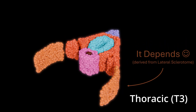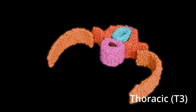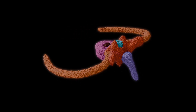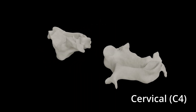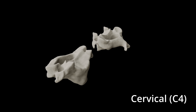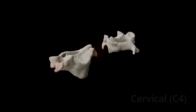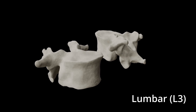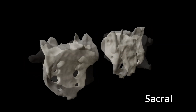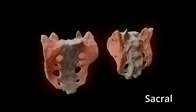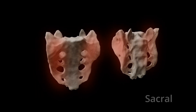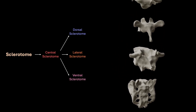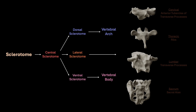In the thoracic region, these costal processes elongate and become the ribs — first cartilaginous, but later they ossify into bone. In the cervical region, costal processes remain small and become the anterior tubercles of the transverse processes. In the lumbar region, they thicken into the transverse processes. In the sacral region, they expand broadly as the sacral alae that help anchor the pelvis. This careful regional variation is how a single repeating template gives rise to very different structures across the spine.